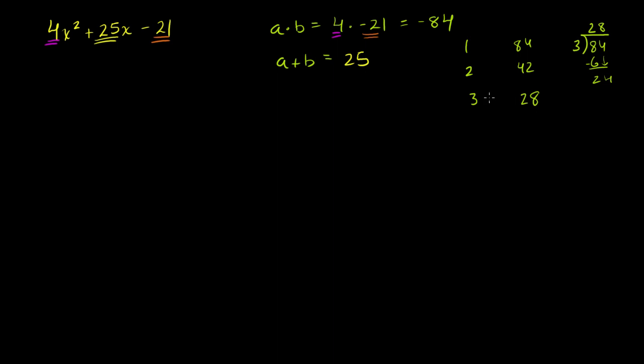This seems interesting. 3 and 28. We have, and remember, one of these has to be negative. So if we have negative 3 plus 28, that is equal to 25. Now, we found our two numbers, but it's not going to be quite as simple of an operation as what we did when this was a 1 or a negative 1.